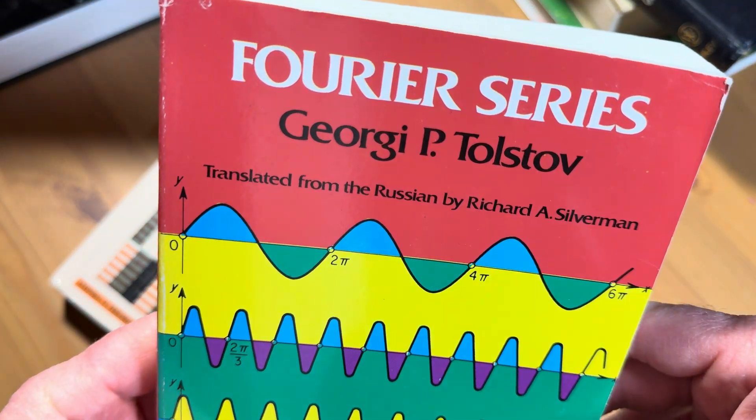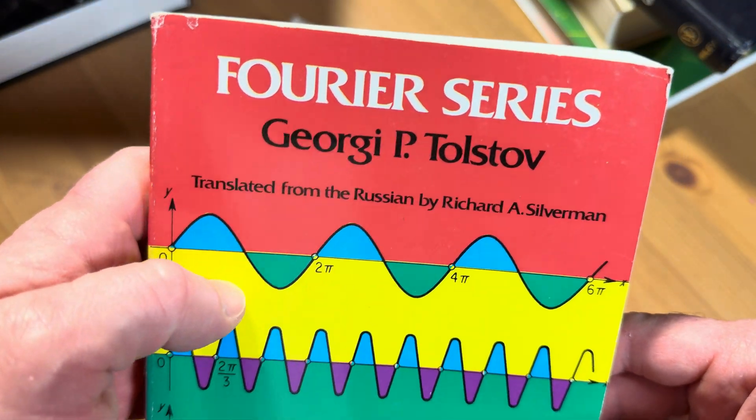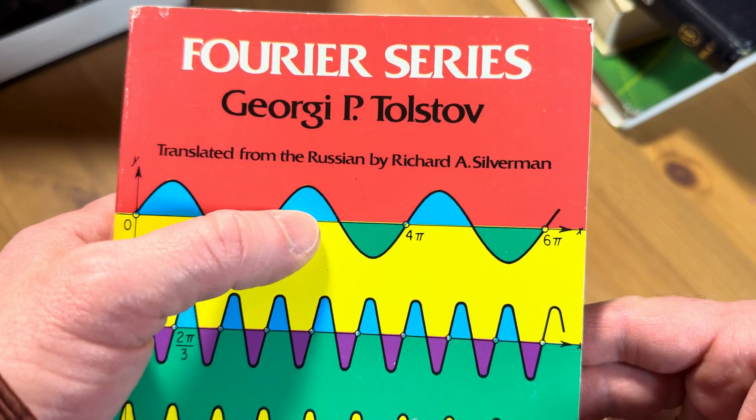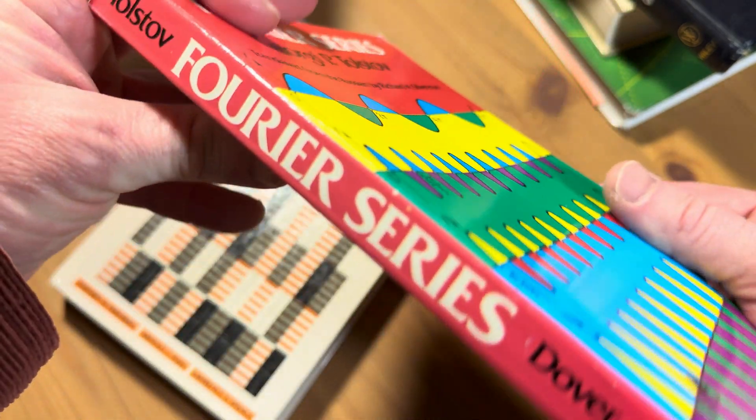It's called Fourier Series and it was written by Georgi P. Tolstov, translated from the Russian by Richard A. Silverman. It's a soft cover and it's a Dover book, so it's well made, it's tough.